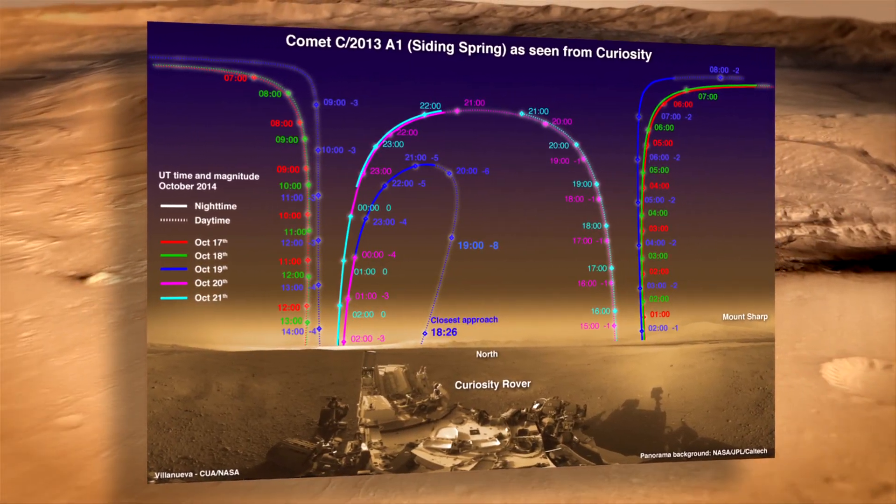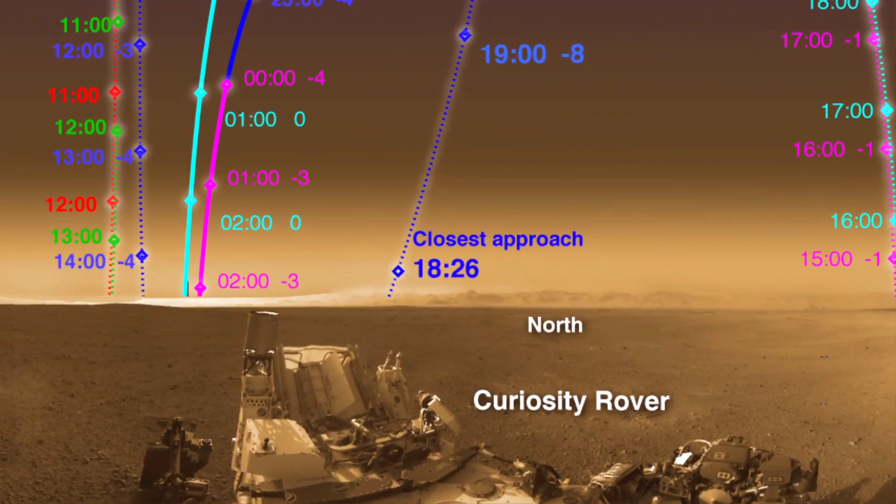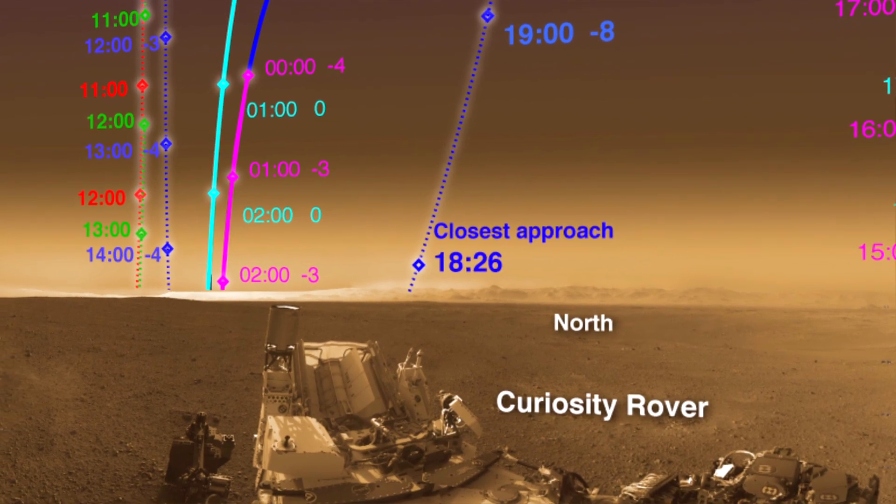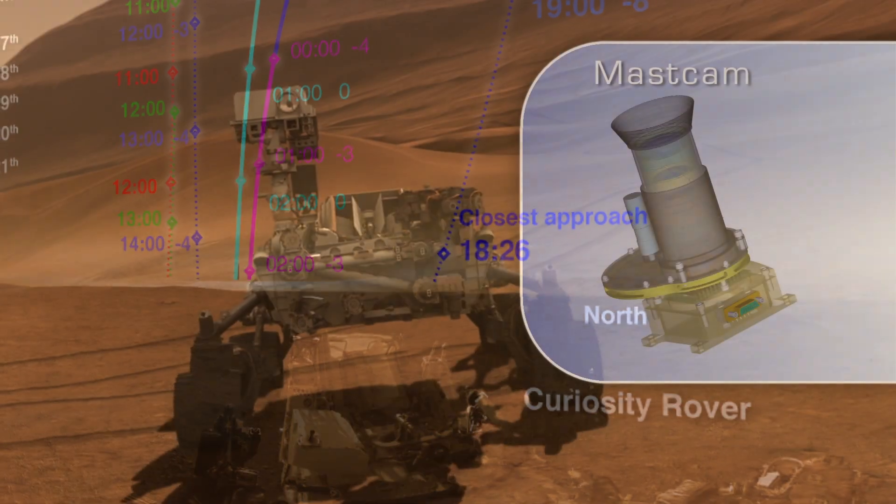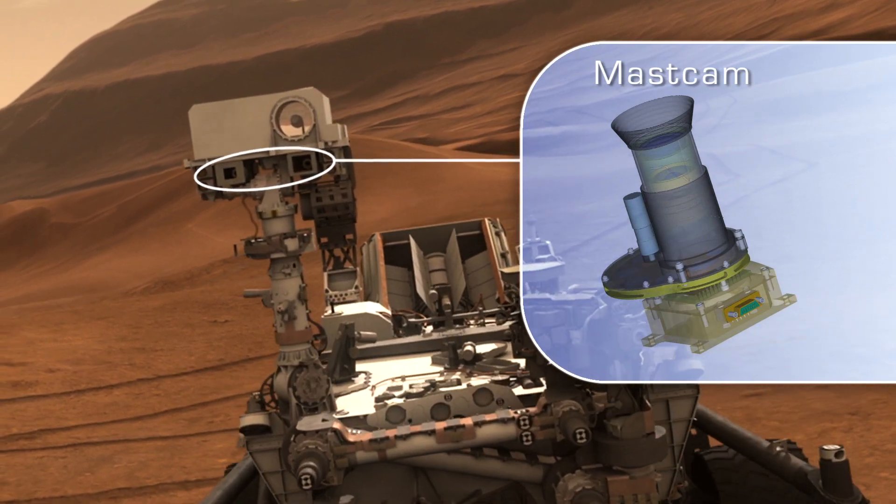At Gale Crater, NASA's Curiosity rover will turn its gaze skyward for several days surrounding the flyby. Curiosity's MastCam will study the comet's general features.